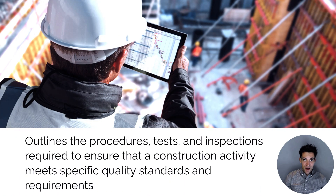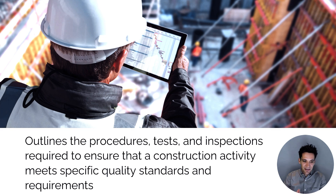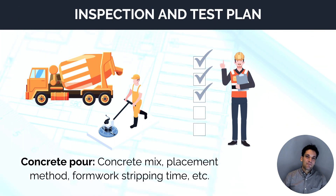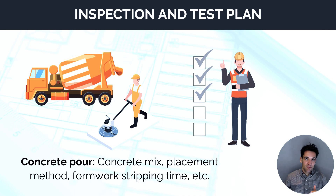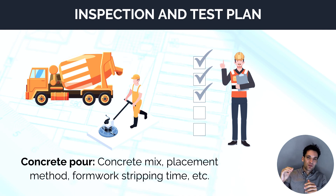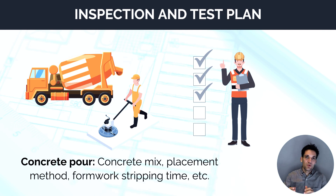An inspection and test plan, or ITP for short, is a document that outlines the procedures, tests, and inspections required to ensure that a construction activity meets specific quality standards and requirements. So if we think about pouring concrete foundations for a building, there's a series of activities involved — ordering the concrete, setting up a concrete pump, placing the concrete, finishing it, and checking it's all been installed correctly. The inspection and test plan documents all these steps and checks what could possibly go wrong and how to verify it's done correctly.